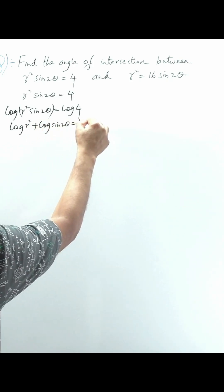Now applying the principles of logarithms: log(a·b) = log(r²) + log(sin 2θ) is equal to log 4.